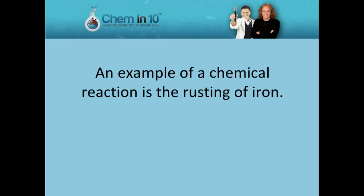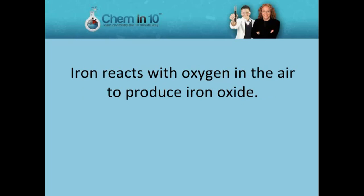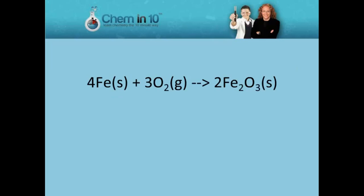An example of a chemical reaction is the rusting of iron. Iron reacts with oxygen in the air to produce iron oxide.